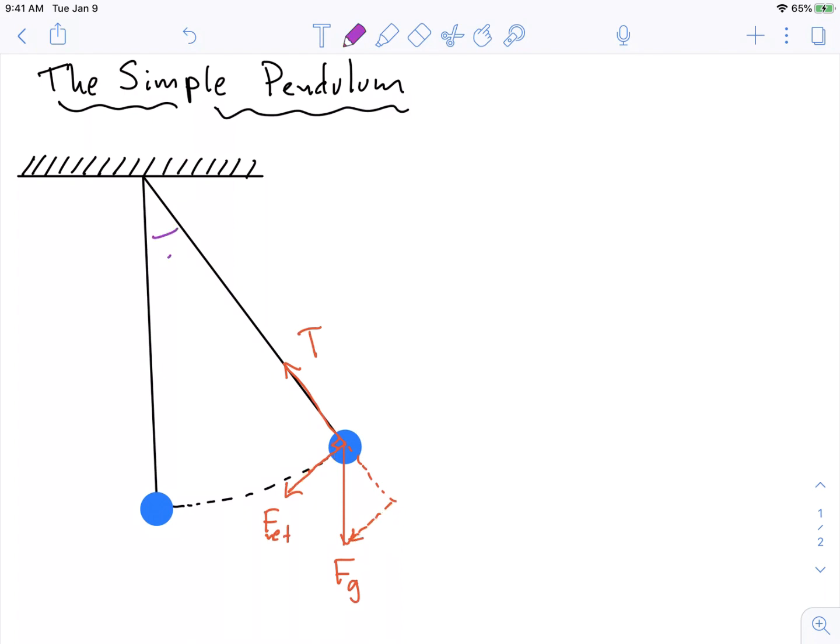So we know that there's some angle theta here, and we know that that same angle theta appears here. So it must mean that the force of gravity, which is equal to mg, it must mean that this component is mg sine theta. Opposite over hypotenuse.